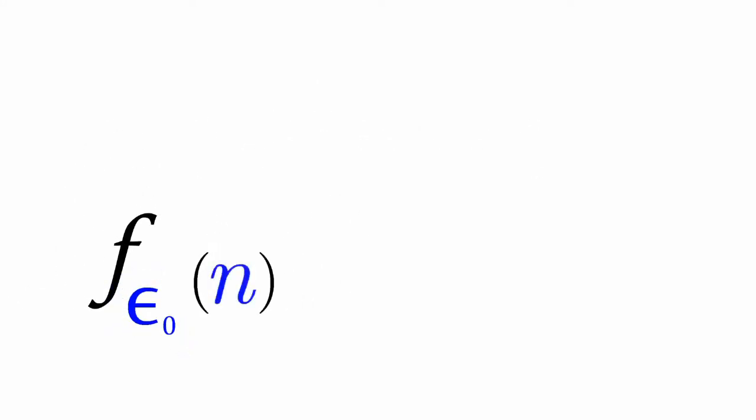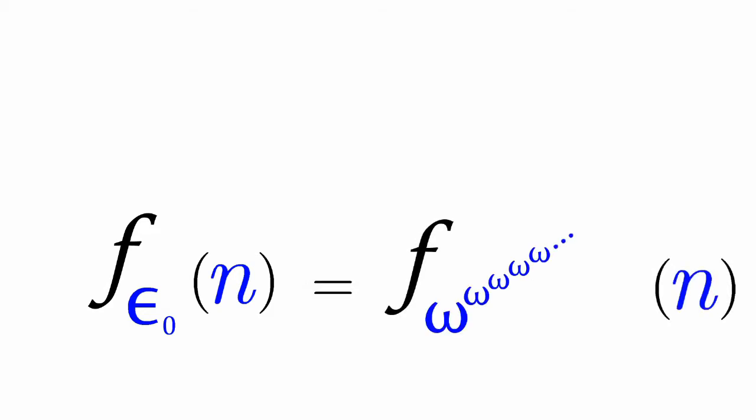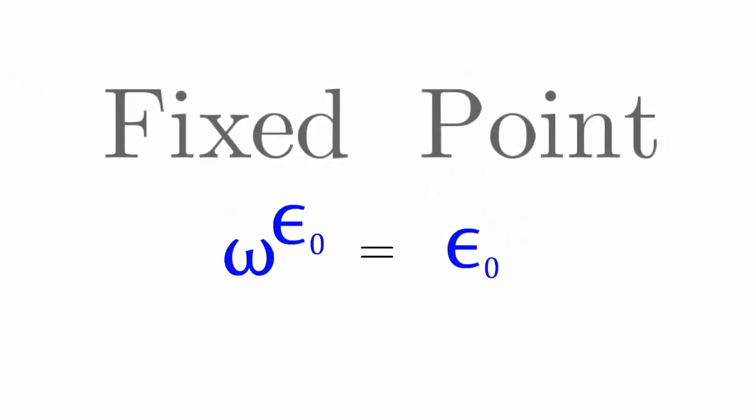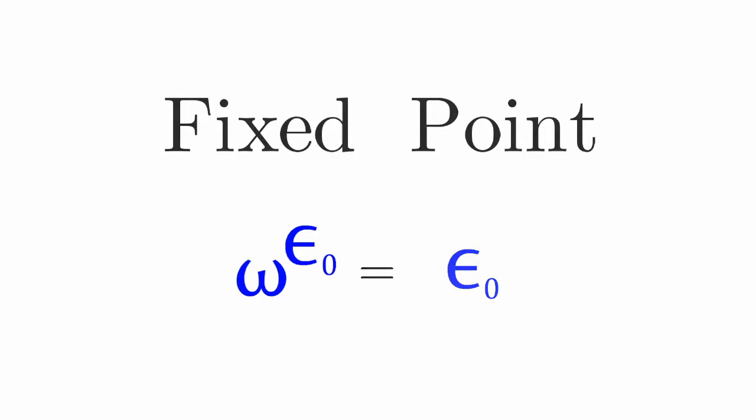In general, we can say f_epsilon_naught of n is equal to f of omega to the omega to the omega — n minus 1 times. Omega to the epsilon_naught is just going to equal epsilon_naught. This is our first fixed point, because omega to the epsilon_naught is just omega to the power of an infinite number of omegas. So adding one more omega to the infinite stack of omegas won't be different from an infinite number of omegas.